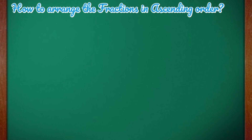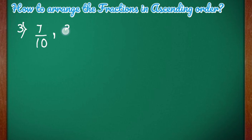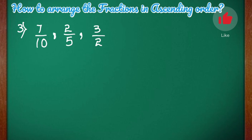To write fractions in ascending or descending order, either the denominators should be same or the numerators should be same. If both are different — if neither the numerators are same nor the denominators are same — then we have to make either the numerators same or the denominators same.